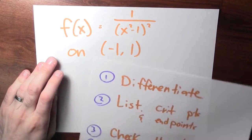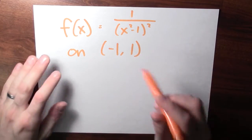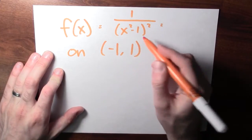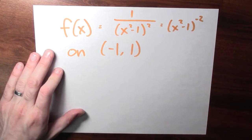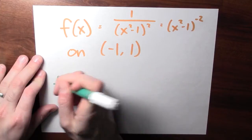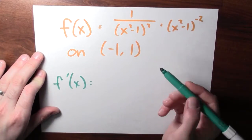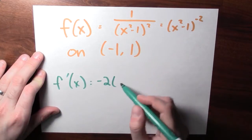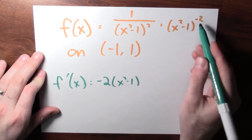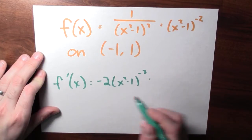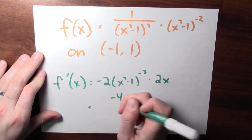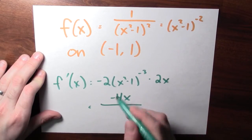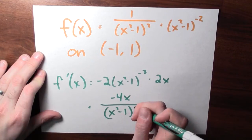The first step is to differentiate this function. Before differentiating, I'll rewrite it: instead of 1 over (x squared minus 1) squared, I'll write this as (x squared minus 1) to the negative second power. By the power rule and the chain rule, the derivative is negative 2 times (x squared minus 1) to the negative third power times 2x, or equivalently, minus 4x divided by (x squared minus 1) to the third power.